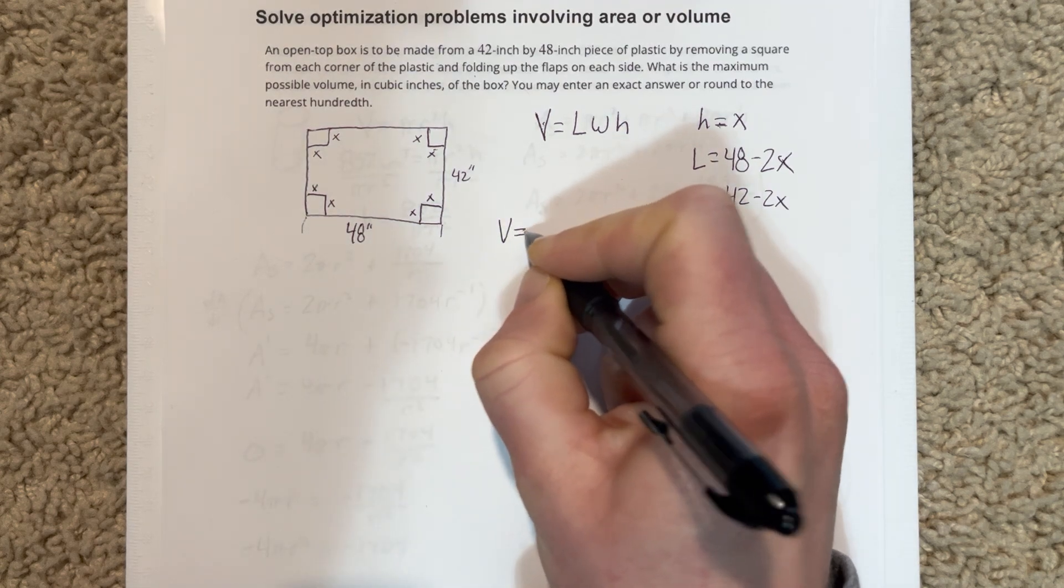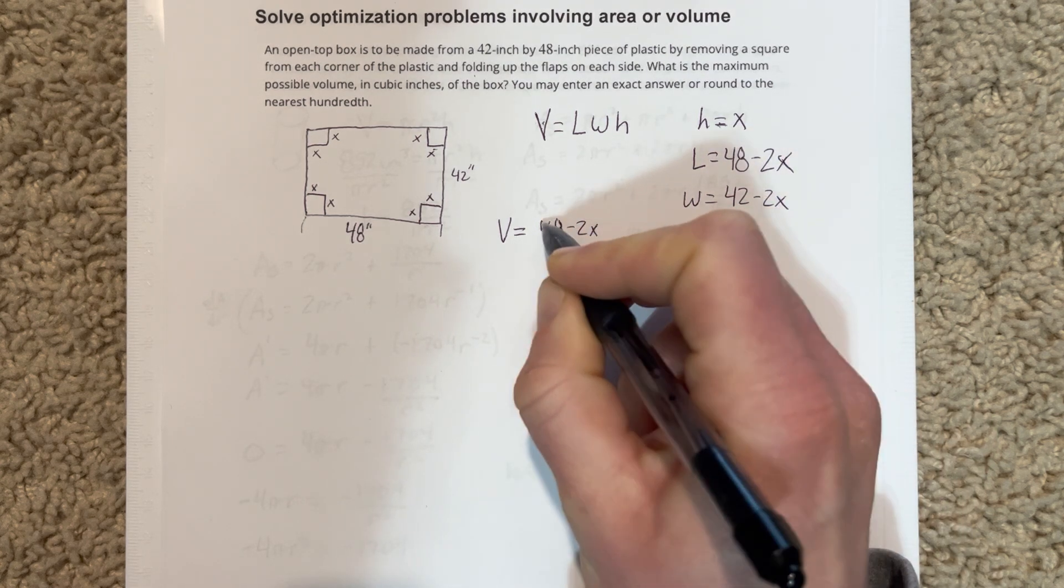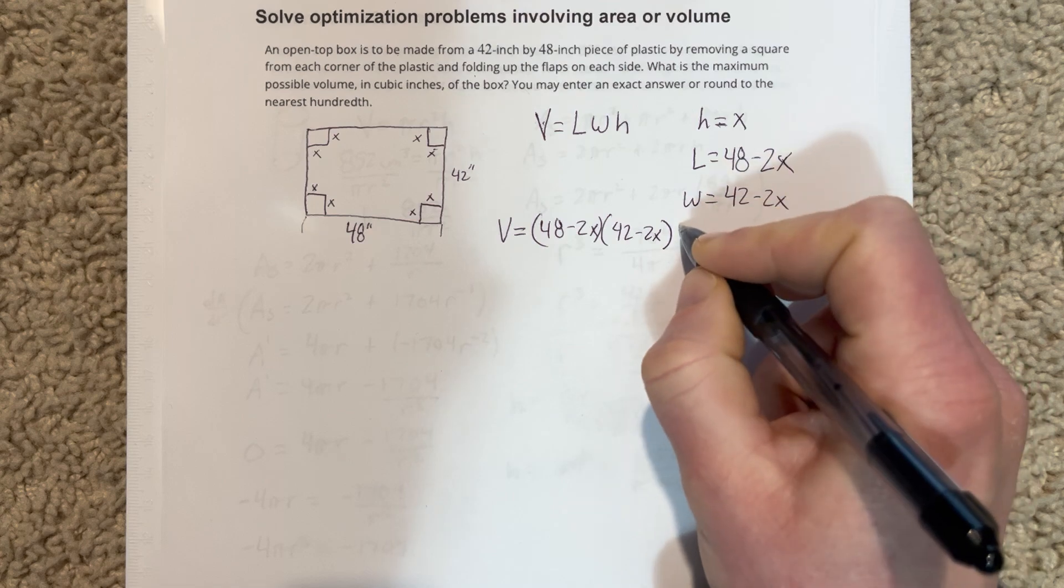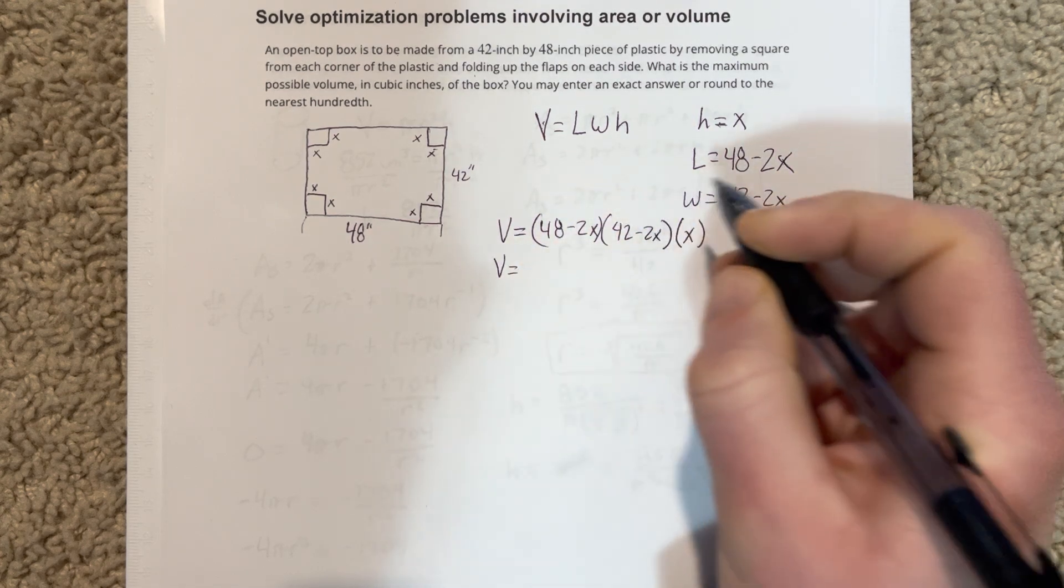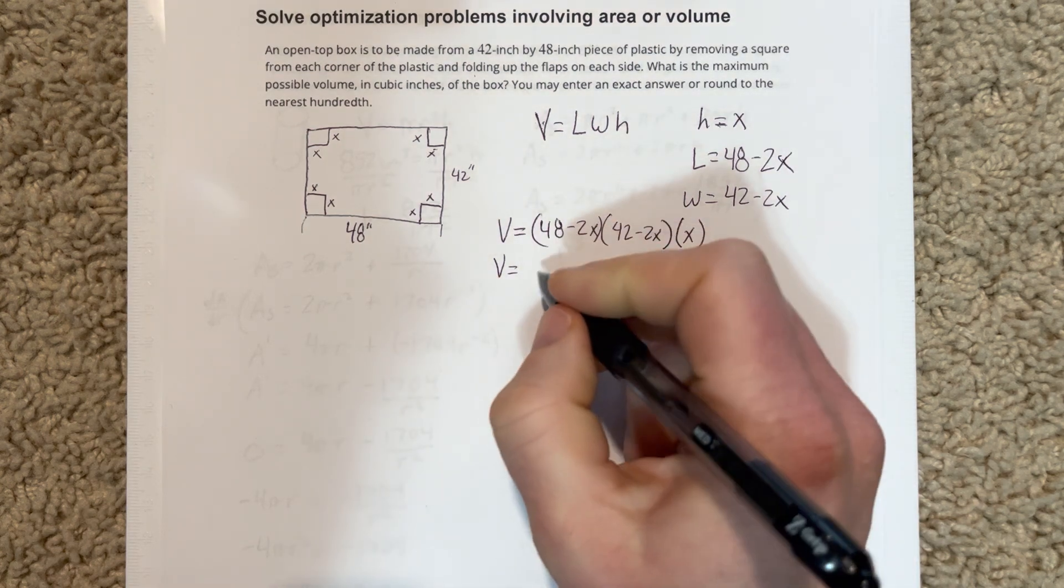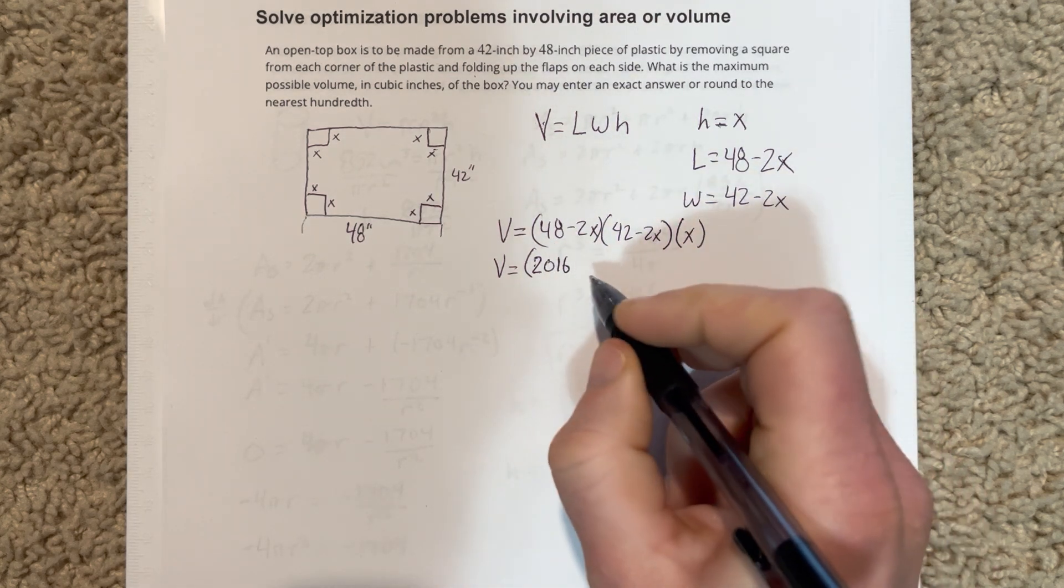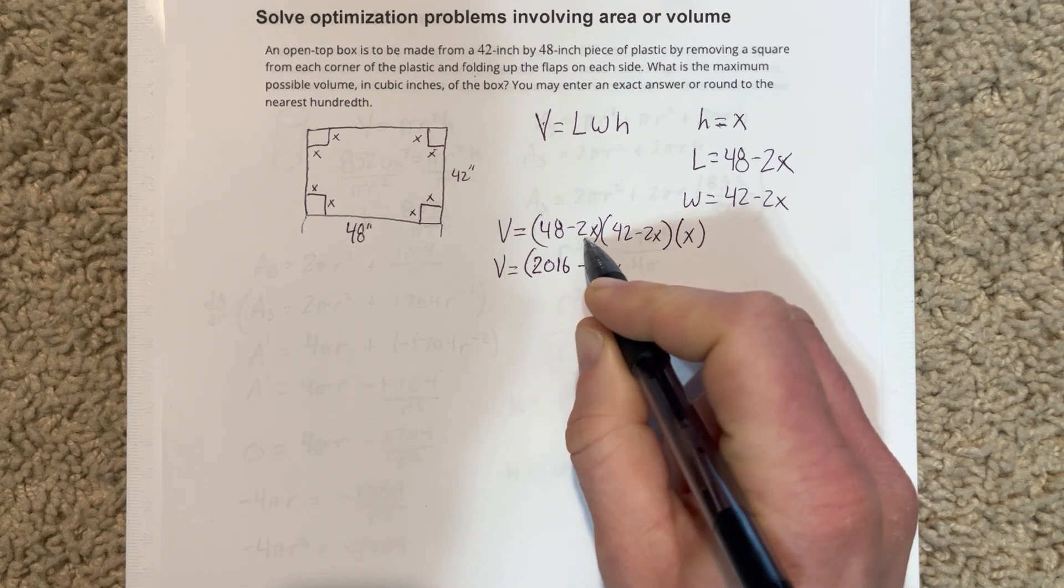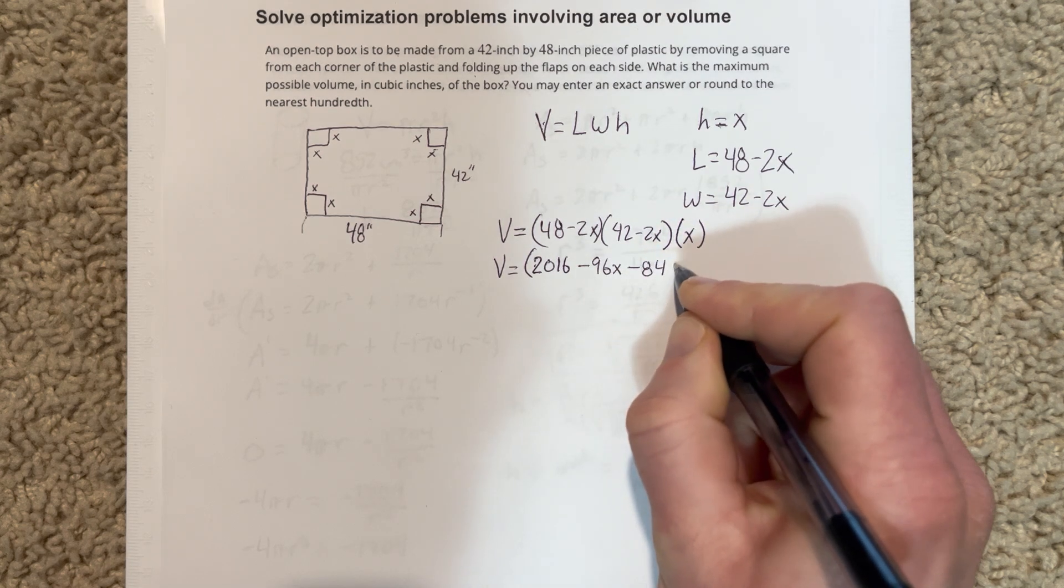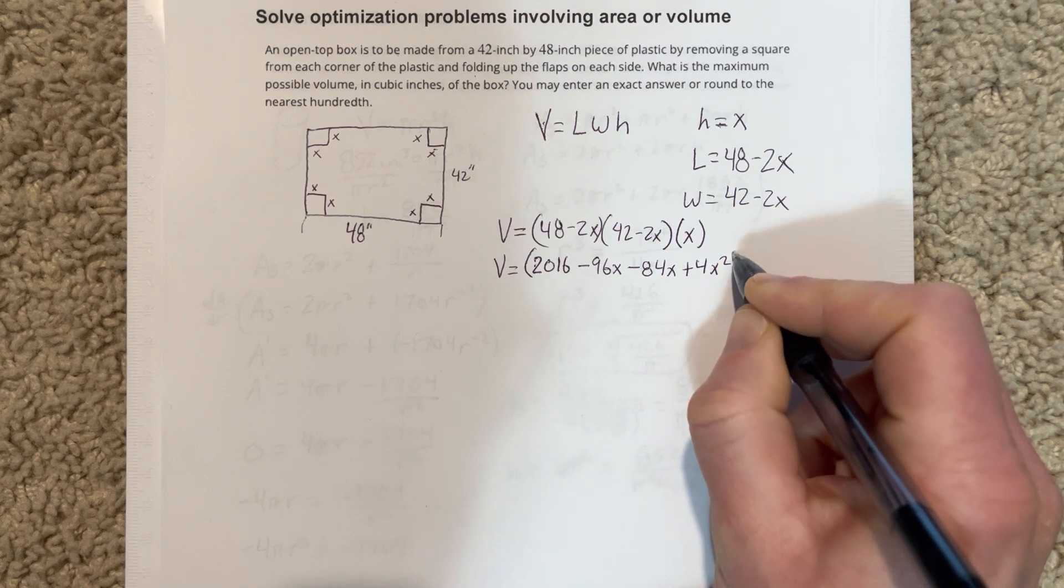So let's go ahead and plug those things in. We've got the volume is equal to 48 minus 2X times 42 minus 2X times X. And let's distribute here. So we end up with 48 times 42, and then 48 times negative 2X, that'd be negative 96X, negative 2X times 42 would be negative 84X, and then negative 2X times negative 2X would be positive 4X squared. That's all times X.